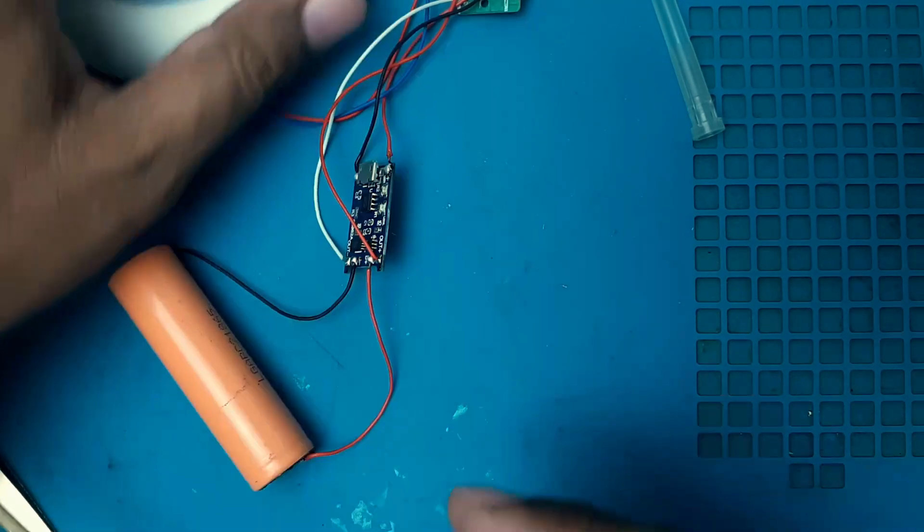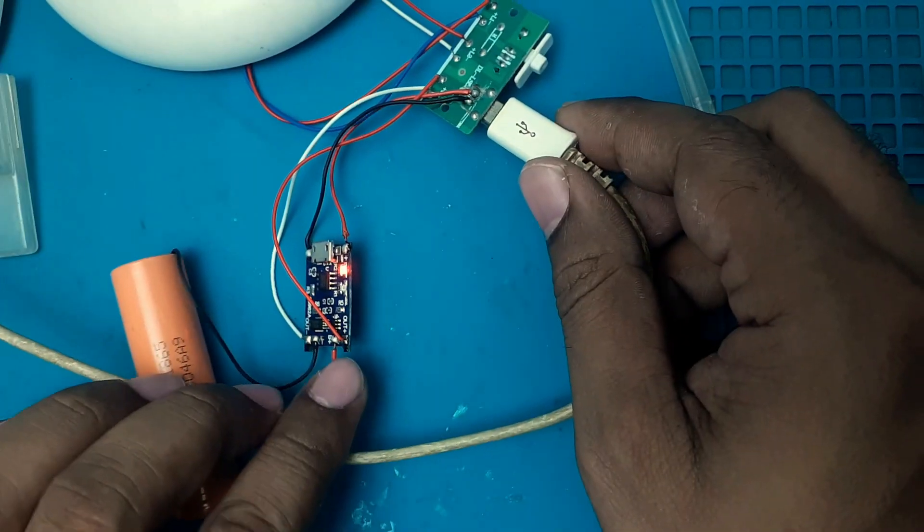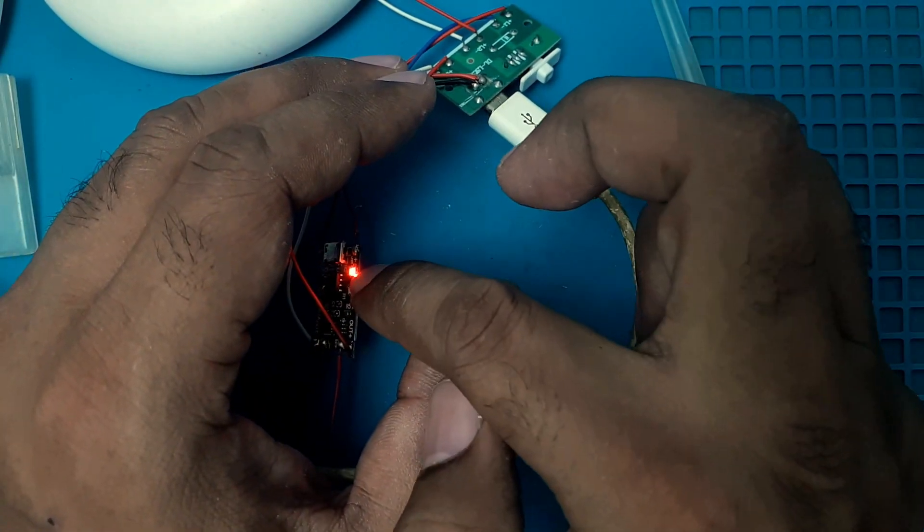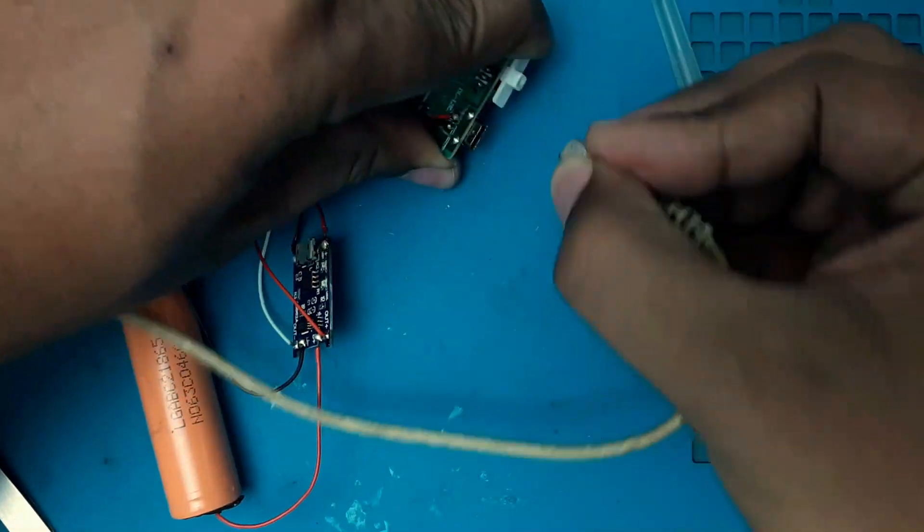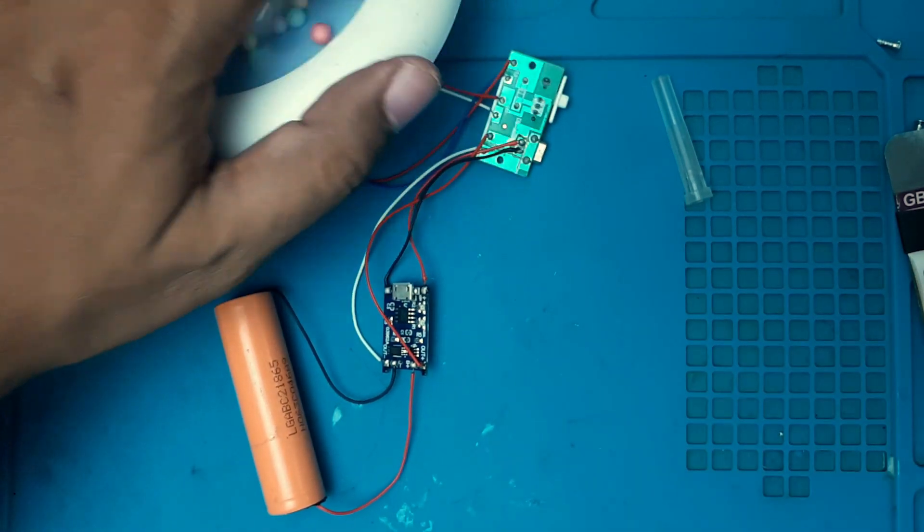And one another thing we have to check. Can it take charge from this port? Yes, you see. The red LED is glowing. That means the battery is taking charge. So everything is okay. Now we are going to assemble it again.